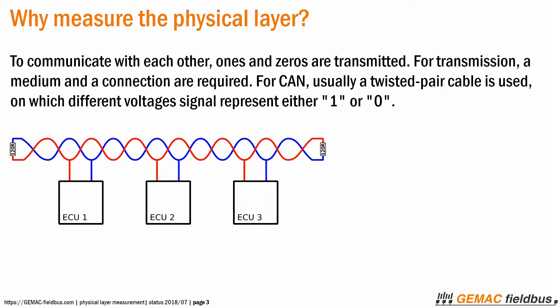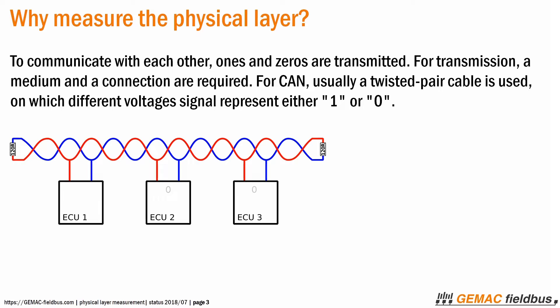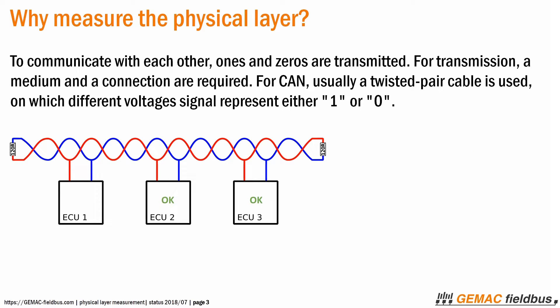To communicate with each other, 1s and 0s are transmitted. For transmission, a medium and a connection are required. For CAN, usually a twisted pair cable is used, on which different voltages signal either 1 or 0.